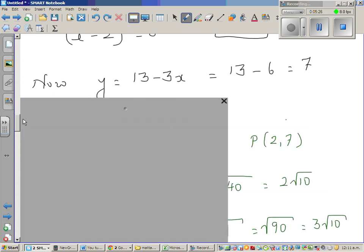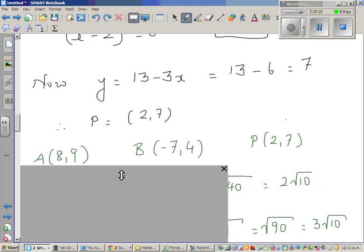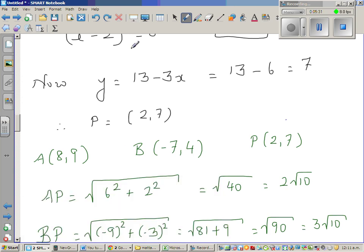So 13 minus 6 is 7. So the coordinates are 2, 7. So P, let me remove the veil. So this is the answer. The coordinate is 2, 7.